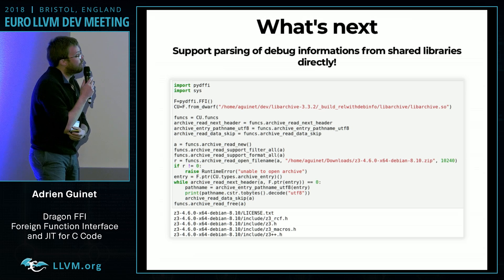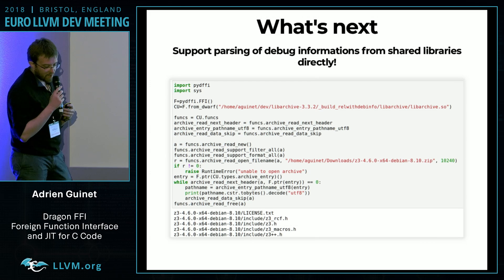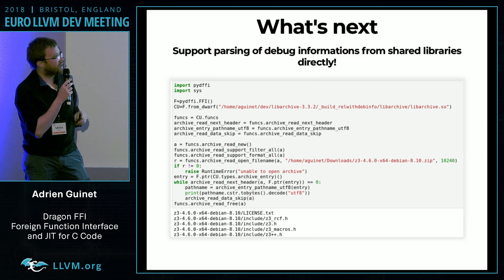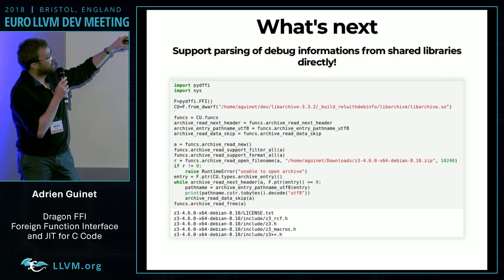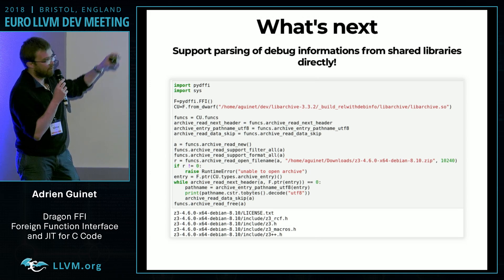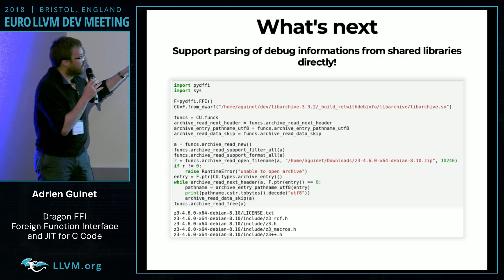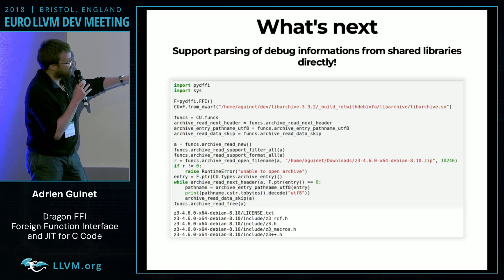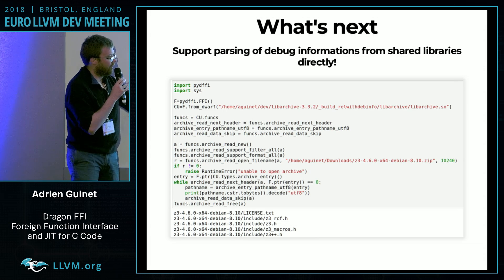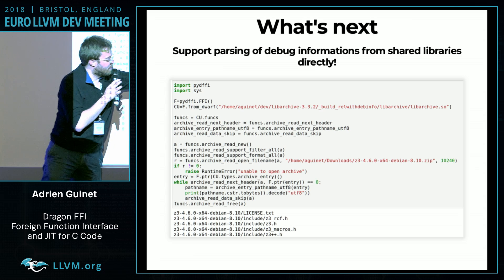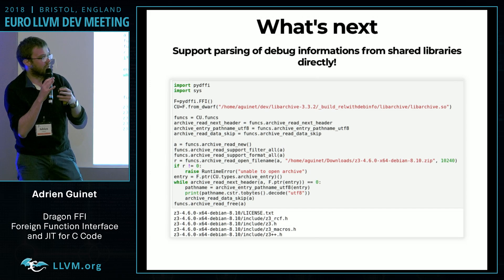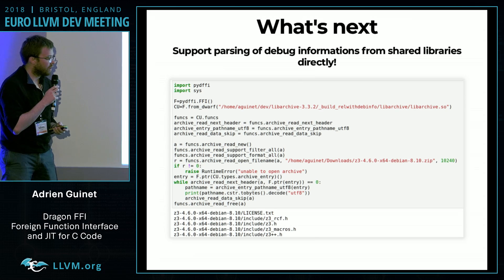Something I've been working on the last few weeks is using DWARF information embedded in shared libraries. For instance, here I'm compiling LibArchive with debug info, loading it using Dragon FFI, and I can use every function and every structure defined in that library directly without using any header file. This is a concrete example with LibArchive where you can read files from an archive. We can pass a C string directly, because we know it takes a const char*, so we can convert a Python 3 string into that automatically.